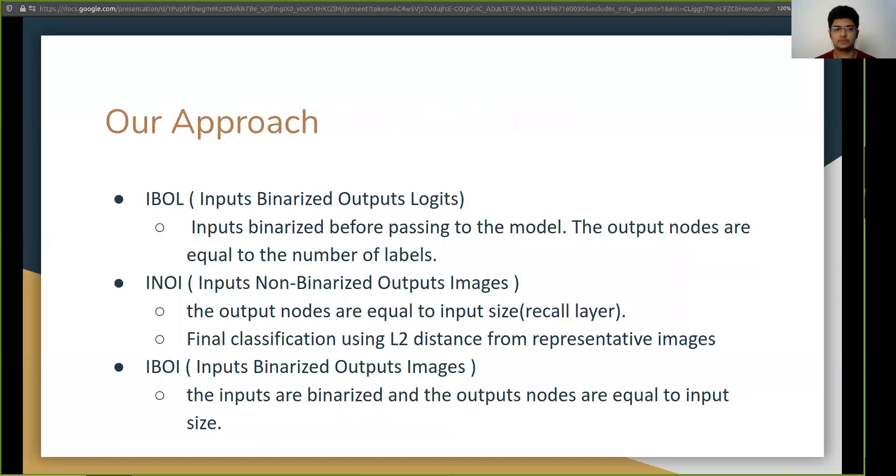So let us talk about our approach. So we use three kinds of techniques. The first one is IBOL and it's a modification over input space. So we add a binarization layer in the input that is for each of the images we binarize it before passing it to the model. In the second approach or INOI we replace the softmax layer in the end with a recall layer.